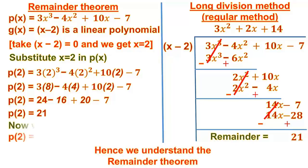We get 21 as the Remainder. Hence, the Remainder is the same for both methods. It is found that the Remainder Theorem method is simpler.